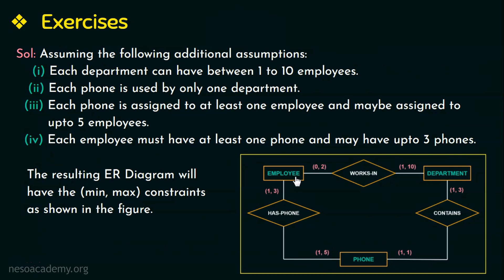For the employee entity type in the relationship works-in, an employee may or may not be assigned to a department as given in the question. Therefore a partial participation, represented as zero. Also it is given that if assigned, he can work in up to two departments, so the maximum value is two. Therefore the min-max constraint of employee entity type in the relationship works-in is (0, 2).